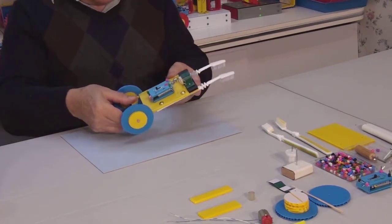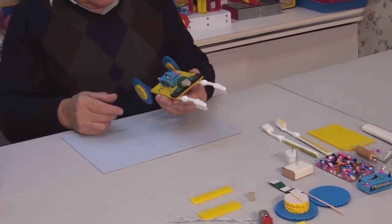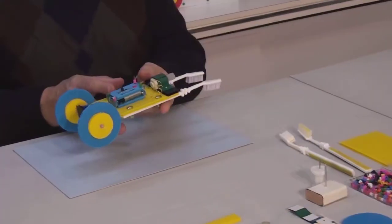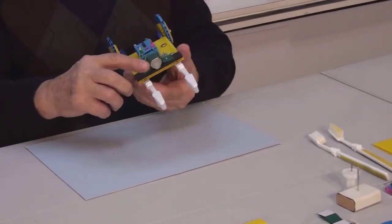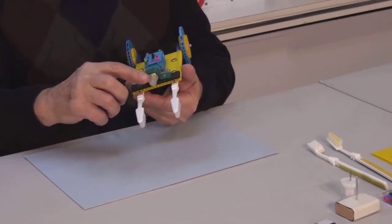The model we are going to assemble today is a toothbrush car. It can move because of the vibration which is created by an eccentric. An eccentric is a small cylinder which is secured slightly off-center on the shaft of the electric motor.